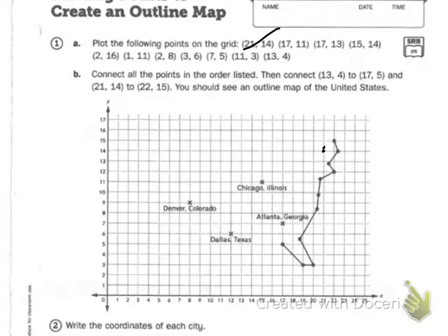17 and 11. Right there. Cross that off. And then you're going to keep going until you have it all done. Once you have, you need to connect all the points in order. Then connect 13 and 4 to 17 and 5 and 21, 14 to 22 and 15. And then you should see an outline of the map of the United States. You do the rest on your own and do the connecting.